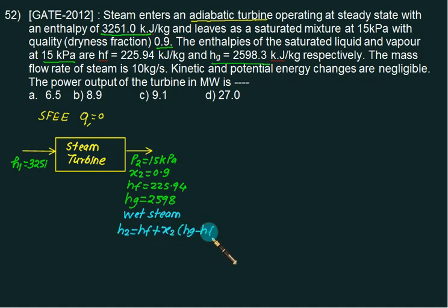So hf is given as 225.94, hg is given as 2598.3. Since the steam is wet, we can calculate h2 as hf + x2(hg - hf). Put all these values at 15 kilopascals and find out the enthalpy, which is 2361.06 kJ/kg. In addition, we are given the mass flow rate equal to 10 kg per second.